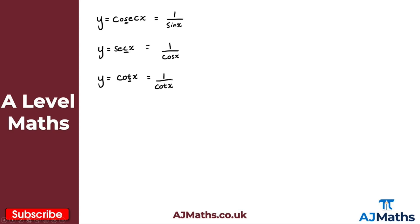Now we can differentiate each one of these. For the first one, if I differentiate y equals cosec x with respect to x, I get dy by dx equals minus cosec x multiplied by cot x.